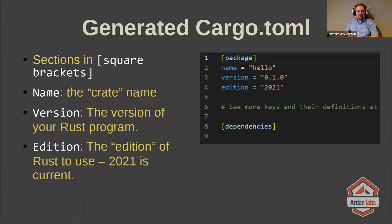It gives you a helpful hint that you can find more key definitions at a URL pointing to the Cargo documentation. And dependencies will always be empty by default, because it won't install anything else.